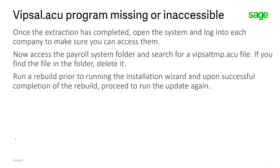Now you need to go back to your payroll system folder and search for the vipsaltmp.acu file. If you find the file in the folder, delete it.